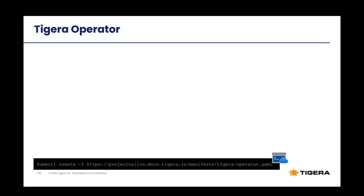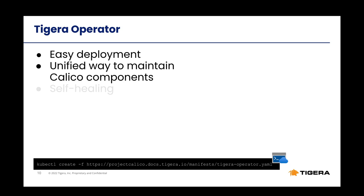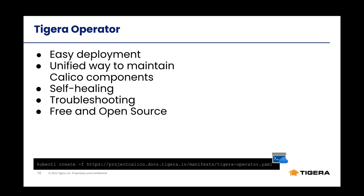The beauty of operator installation is that it's just a one-liner command. After installing the operator, you can configure all Calico components from your installation resource within the Kubernetes environment. The operator then monitors the installation resource to make sure your Calico is always configured correctly. The operator provides a simple way to troubleshoot each Calico component installed on your cluster. And just like Calico, the Tigera operator is free and open source. You can use this QR code to check its GitHub page and get involved with its development and shape its future.